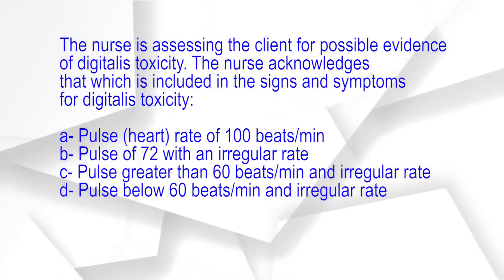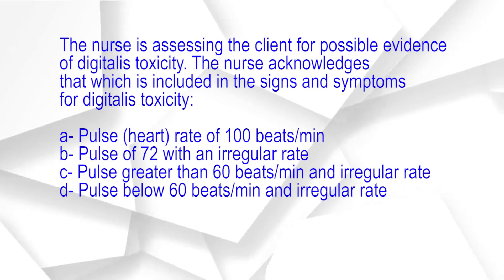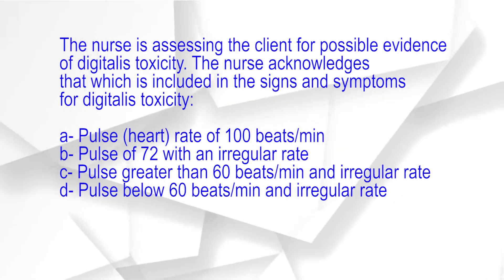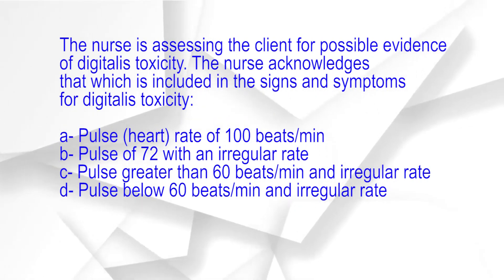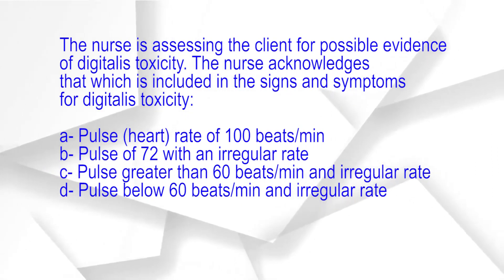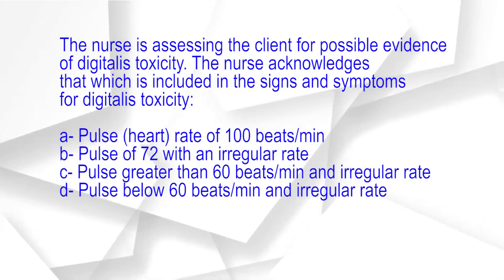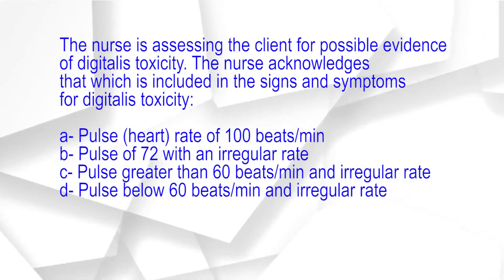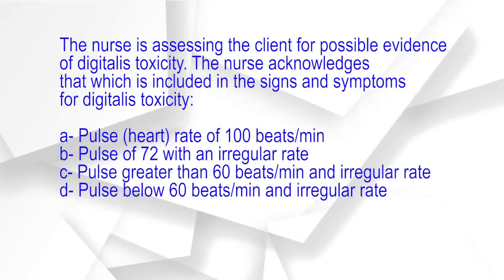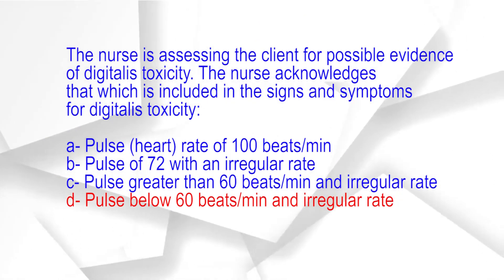The nurse is assessing the client for possible evidence of digitalis toxicity. Which of the following is included in the signs and symptoms of digitalis toxicity? A. Pulse heart rate of 100 beats per minute. B. Pulse of 72 with an irregular rate. C. Pulse greater than 60 beats per minute and irregular rate. D. Pulse below 60 beats per minute and irregular rate. The correct answer is option D: Pulse below 60 beats per minute and irregular rate.